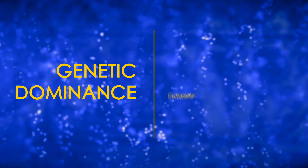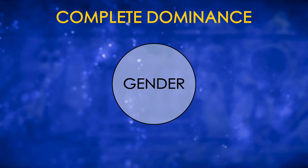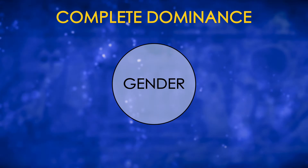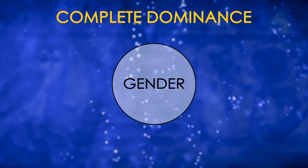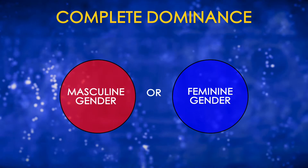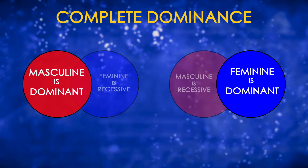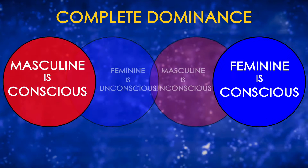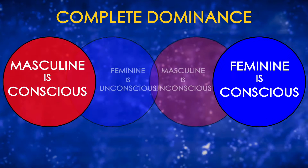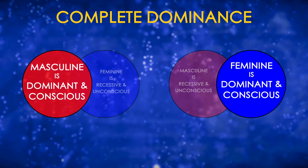Dominance can be complete, incomplete, or cooperative. Complete dominance divides a design element, such as gender, into its two most basic parts. When complete dominance determines our gender, we inherit either masculine or feminine gender. Complete dominance achieves this outcome by having the operating system of one hemisphere completely dominate the other, leaving us conscious only of our dominant system. When dominance is complete, our dominant system manages the flow of information to mind and gives us our gender. Our non-dominant system and gender are recessive and serve us unconsciously.